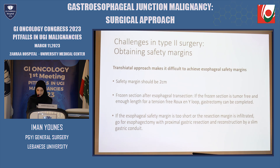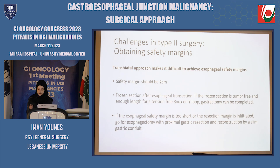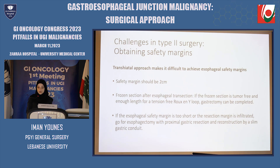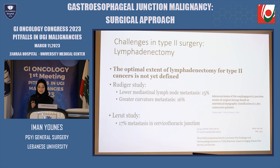The most important issue to discuss is the extent of esophageal infiltration of the type 2 carcinoma. The transhiatal approach makes it difficult to achieve esophageal safety margins, with consequences for the achievable esophageal safety margin and construction of a safe esophagojejunostomy. The oral safety margin of the esophagus should be at least 2 centimeters on the extended fresh specimen; if it is less, the prognosis is significantly impaired according to data of Min et al. Therefore, if a transhiatal resection of AEG type 2 is planned, it is recommended to first prepare the distal esophagus with an appropriate safety margin, then perform a frozen section after esophageal transection. If the frozen section is tumor-free and there is enough length for a tension-free Roux-en-Y loop, we proceed with gastrectomy. If the esophageal safety margin is too short or the resection margin is infiltrated, we go for esophagectomy with proximal gastric resection and reconstruction by a slim gastric conduit.